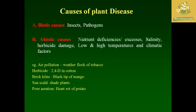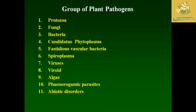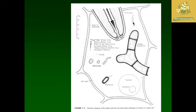While seeing about the group of pathogens which affect plant diseases: protozoa, fungi, bacteria, Candidatus phytoplasma, fastidious vascular bacteria, spiroplasma, virus, viroids, algae, phanerogamic parasites, and abiotic disorders. I have given some pictures of viroids, bacterium, as well as cell walls, and have the fungus and protozoa pictures which affect the plant cells. This is also known as the schematic diagram of shapes and sizes of certain plant pathogens in relation to the plant cells.